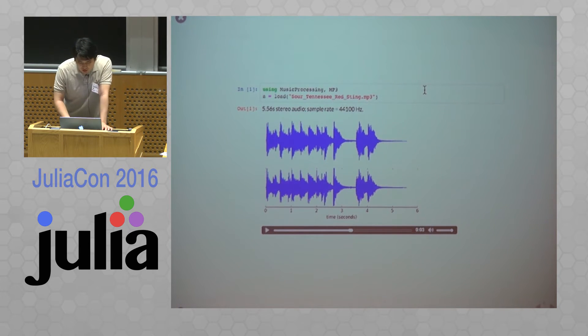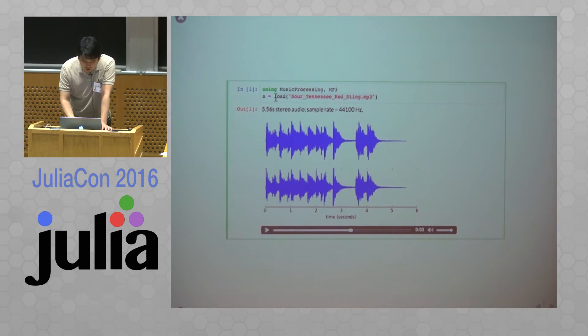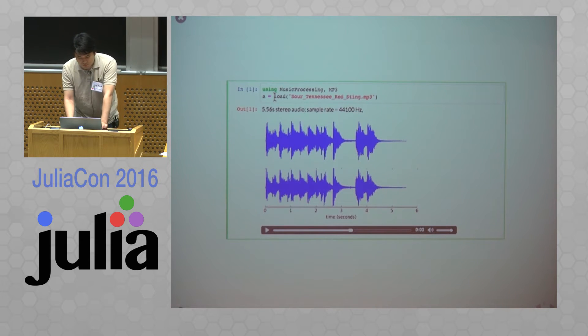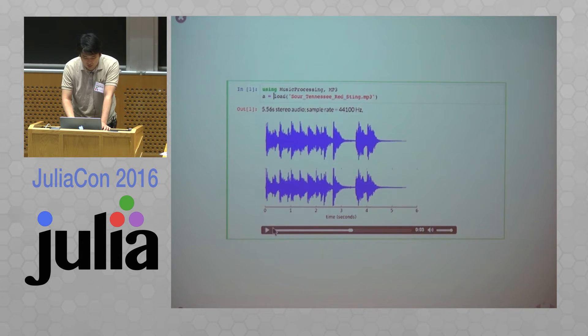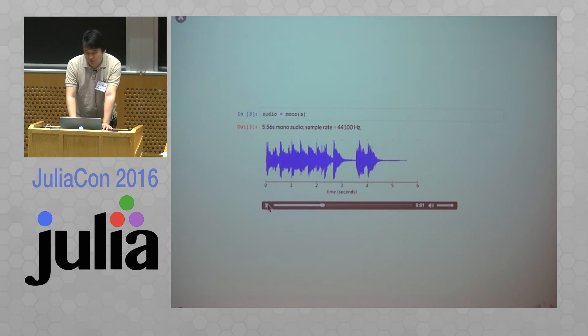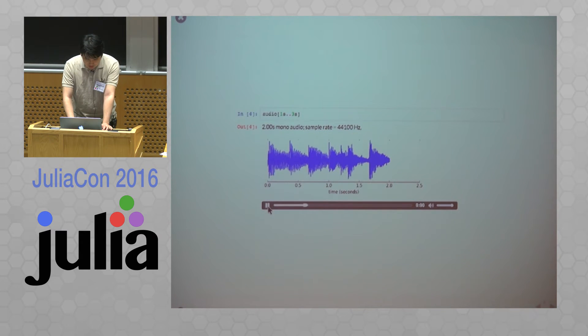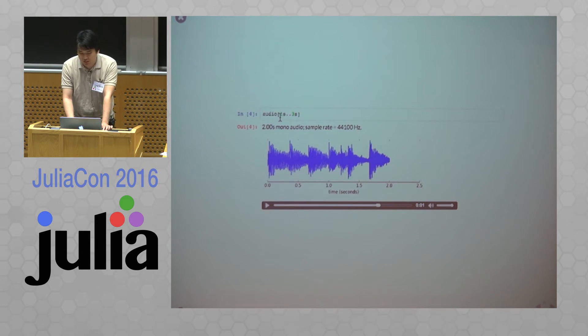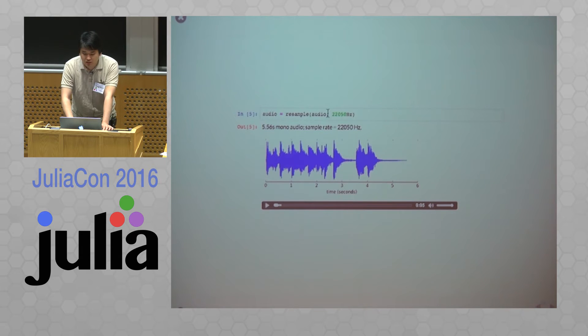This is an example of reading an MP3 file. The return value of this function is the SampleBuf structure from JuliaAudio. I wrote a custom writeMime function for display in Julia 0.5 to render a waveform and an HTML5 audio tag. What you see in the console depends on the MIME type the current display supports. We can make the audio mono — not much difference. We can also crop the audio using SI quantities, which is a feature of the SampleBuf/SampleSignals package. And we can resample the audio to a lower sampling rate.